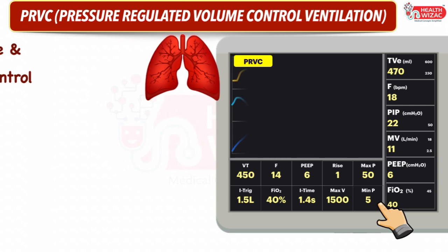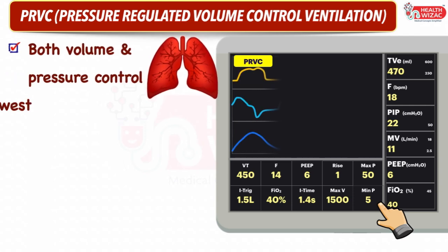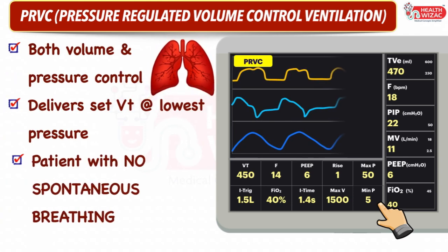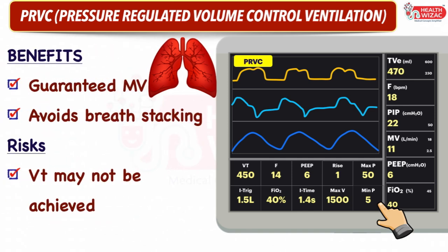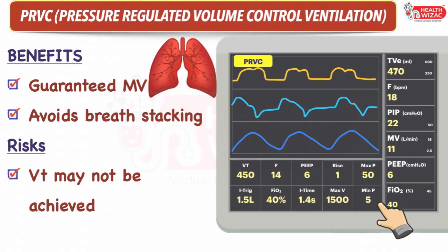PRVC is a kind of control mode that allows both pressure and volume control. A preset tidal volume is delivered at a set rate with the lowest possible pressure. It should be used in patients with no spontaneous breathing. Advantages include guaranteed minute ventilation and avoidance of breath stacking, whereas disadvantages include less control over tidal volume.